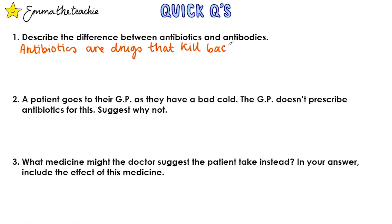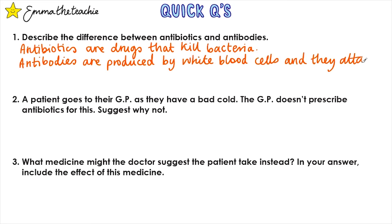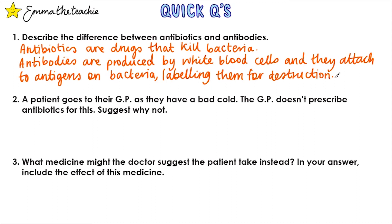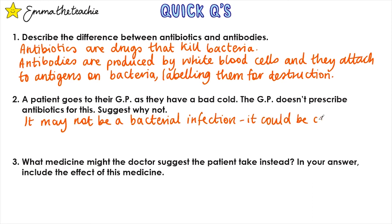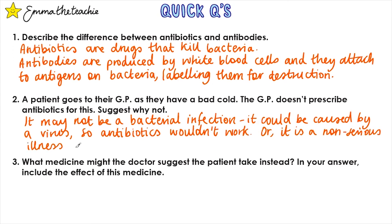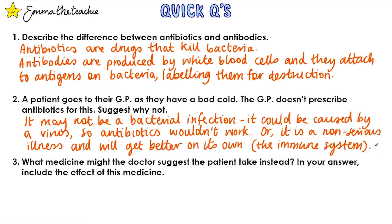Antibiotics are drugs that kill bacteria, whereas antibodies are produced by white blood cells and they attach to antigens on bacteria, labelling them for destruction. So they ultimately cause the same thing. Question two: a patient goes to their GP as they have a bad cold. The GP doesn't prescribe antibiotics. Suggest why not? It may not be a bacterial infection — it could actually be caused by a virus, so antibiotics wouldn't work. Or it might not be a serious illness and it will get better on its own, i.e., the immune system will destroy the pathogens.